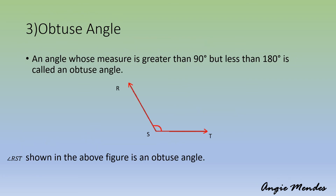Obtuse angle: an angle whose measure is greater than 90 degrees but less than 180 degrees is called an obtuse angle. Angle RST is an obtuse angle.